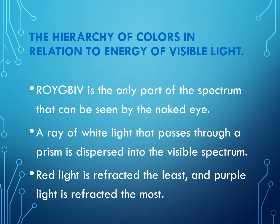The red light is refracted the least, and purple light is refracted the most. In science, the term 'refracted' is used; in regular conversation, we can say 'bent.' So red is the least refracted light, while the most refracted light is the purple.